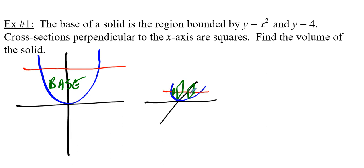We imagine each of these little slices is a Triscuit — a squarish cracker — where the side always goes from the red curve to the blue curve, coming up off the table. The triscuit loaf has a flat side on the table, and how high it comes off depends on how wide the base is at that point.